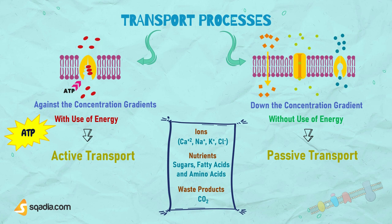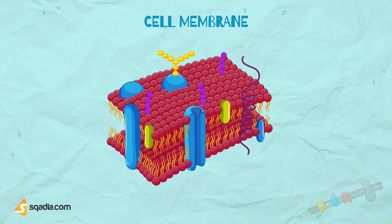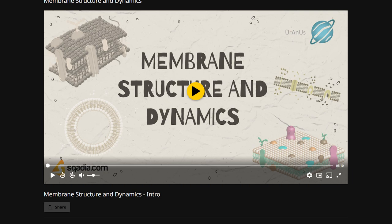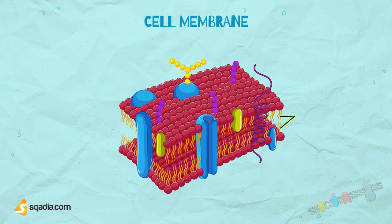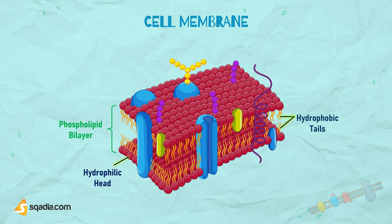You know the structure of the cell membrane — if you don't, do watch our video on membrane structure and dynamics to make it more clear. In the cell membrane, the phospholipids are tightly packed together. This structure causes the membrane to be selectively permeable, allowing selective substances to pass through it, while providing a barrier to the diffusion of ions and polar molecules larger than about 150 daltons.